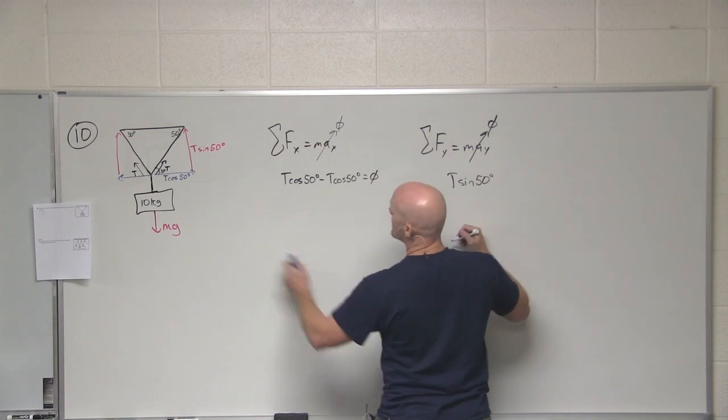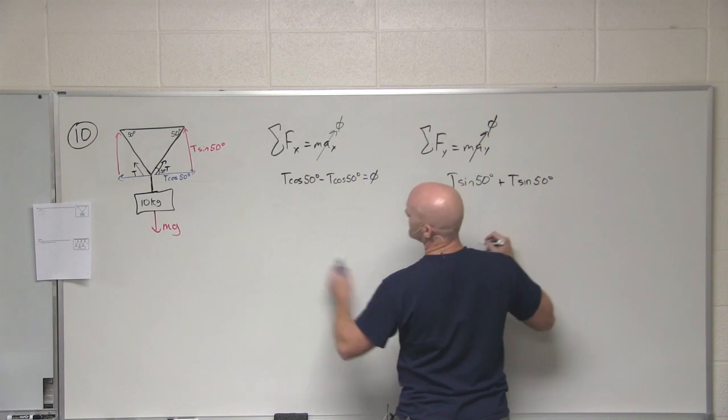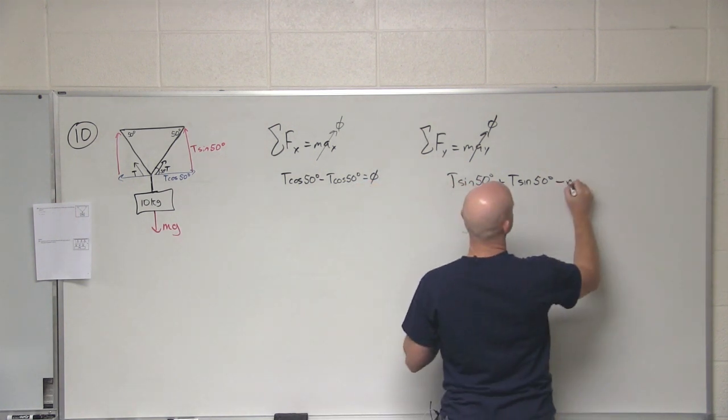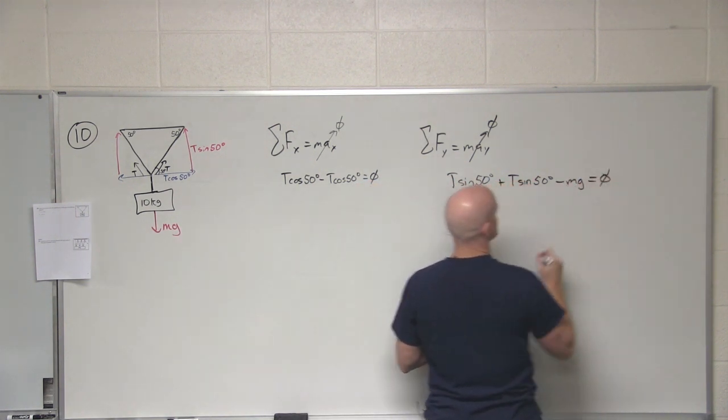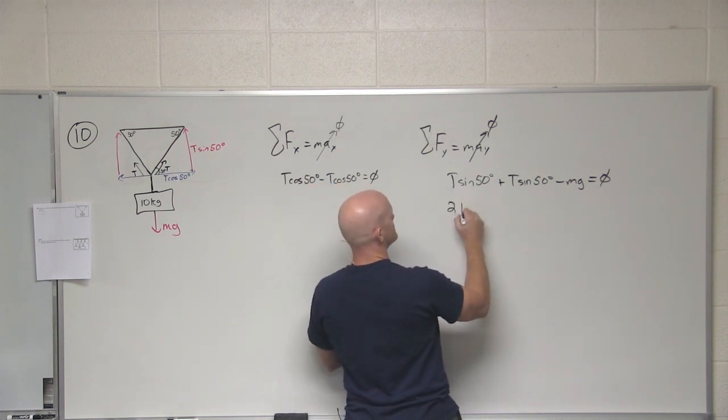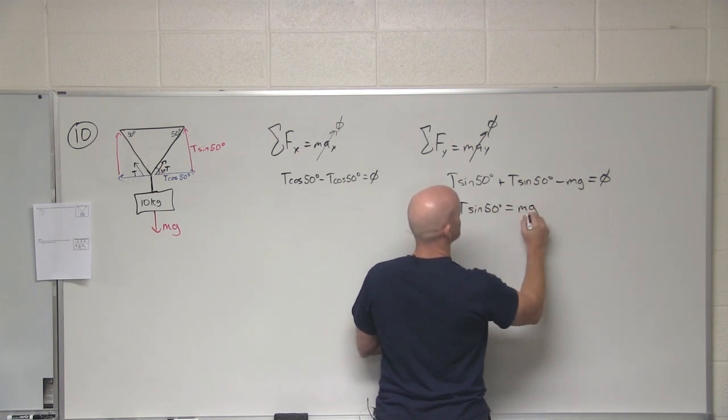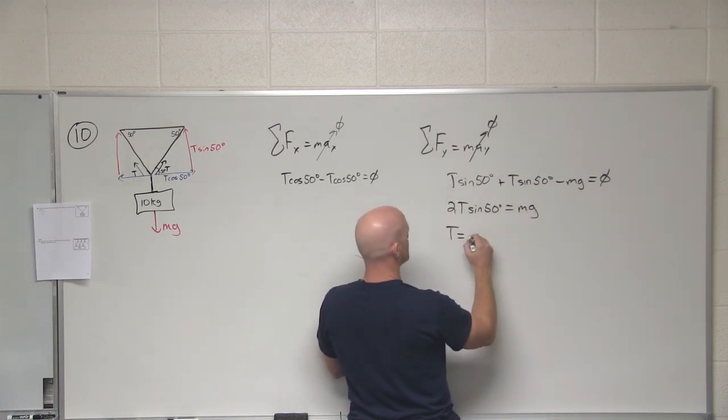But in the y direction, we've got t sine of 50 on one side of the wire, an additional t sine 50 on the other side of the wire, and then mg points down. And this all adds up to zero. Here's what we'll solve for our tension here. So if we look here, simplify this: 2t sine of 50 degrees equals mg.